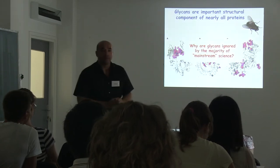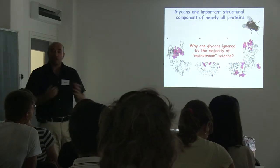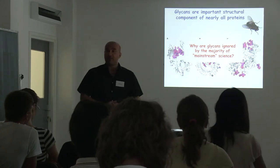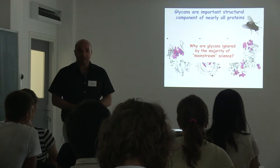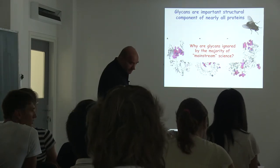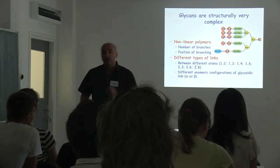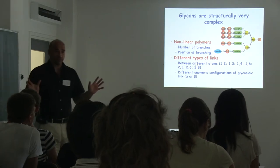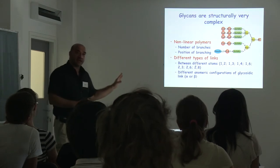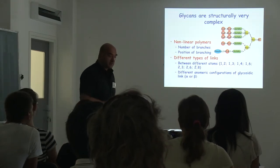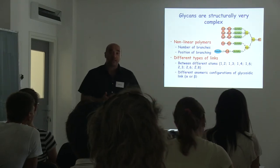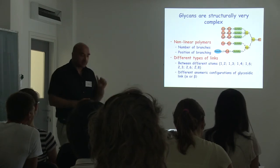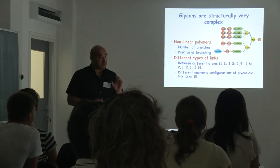Why is the majority of scientists ignoring glycans? There is a very simple reason — it is very difficult to study glycans. Contrary to proteins and DNA, which are linear molecules where a sequence of letters gives you the full chemical structure, you cannot do it for glycans. Glycans are non-linear and branched. They have different components which can be linked in different ways. There is a huge structural complexity which is very difficult to study chemically. The analytics of glycans is very complex.